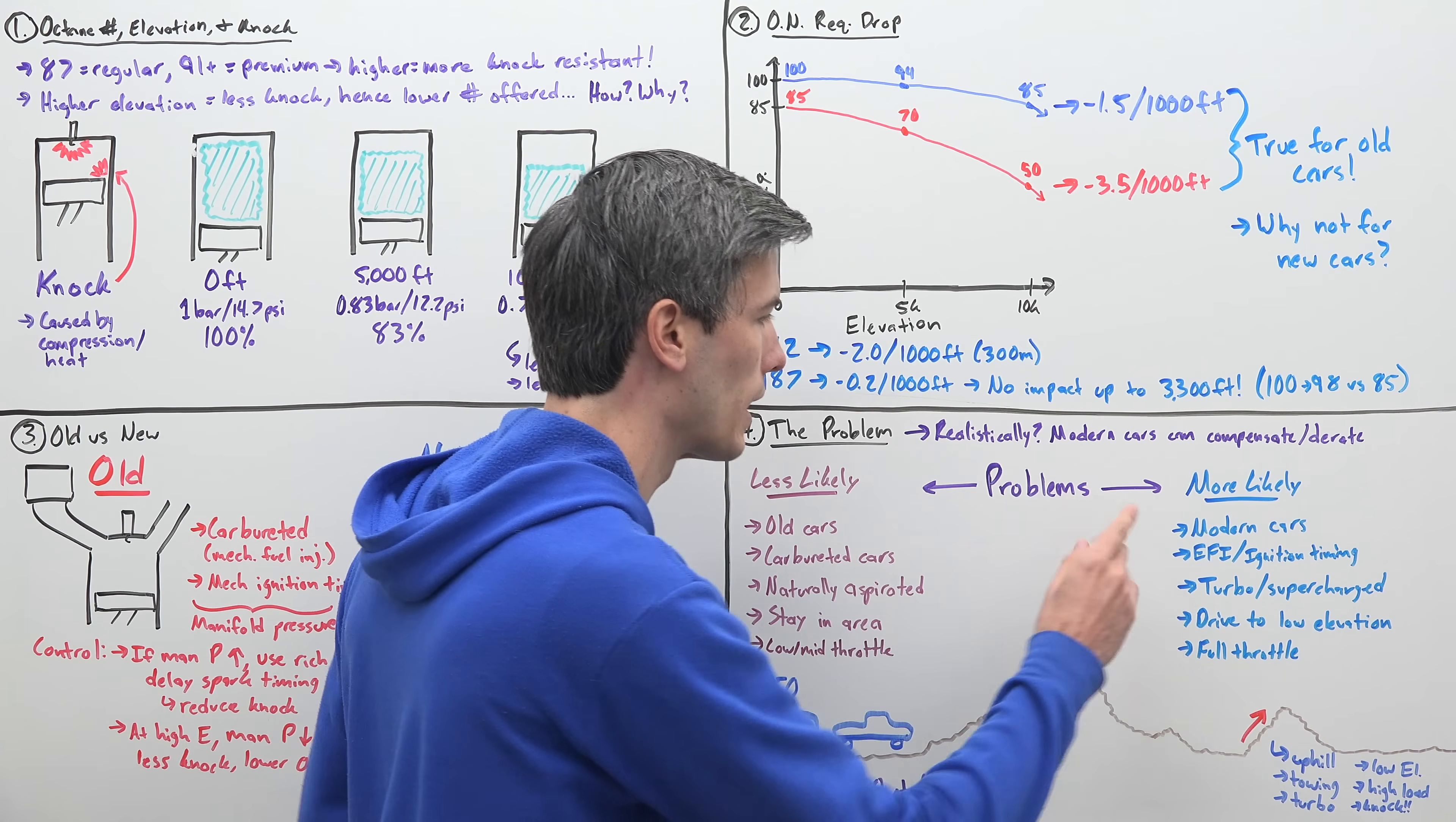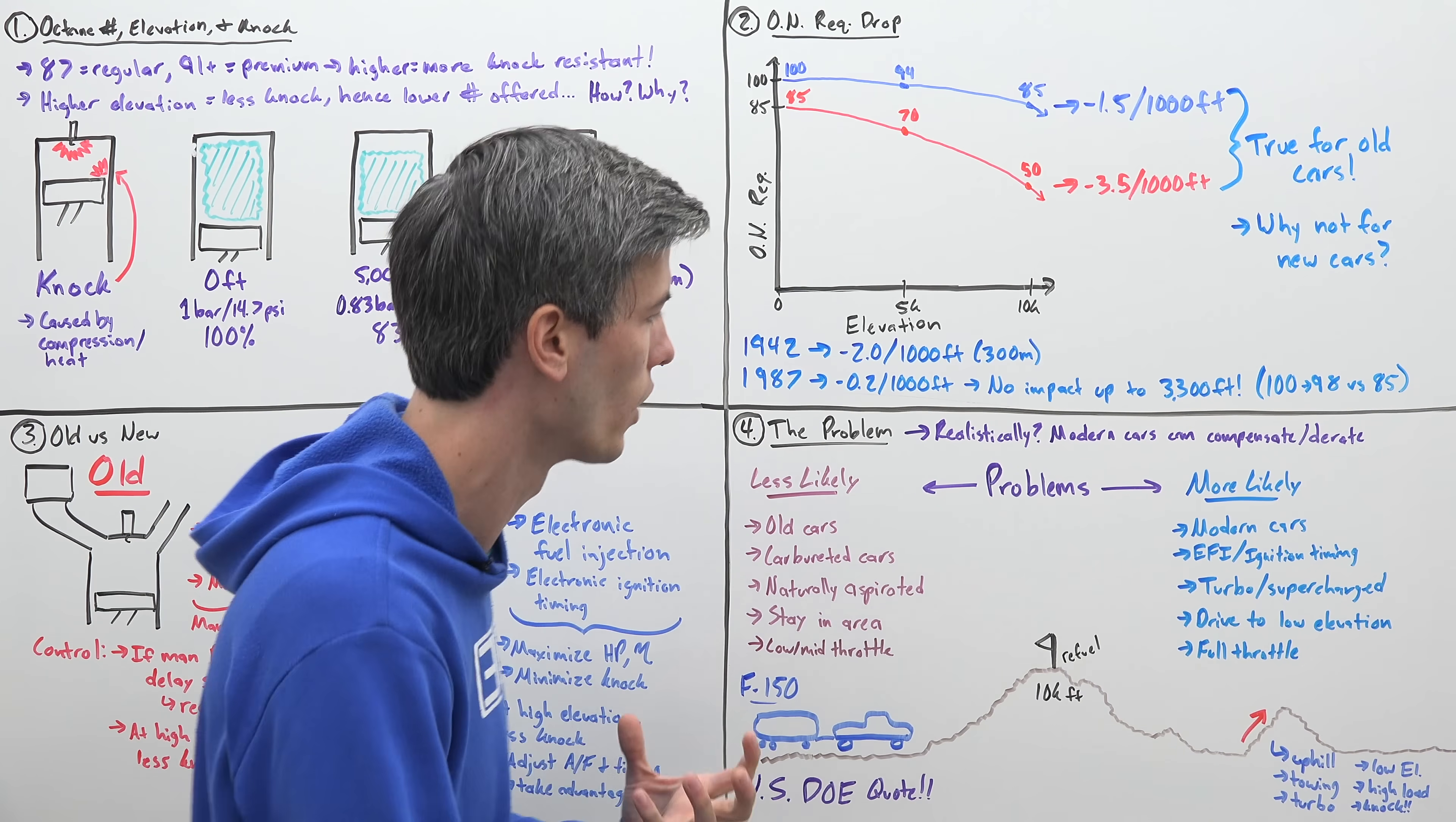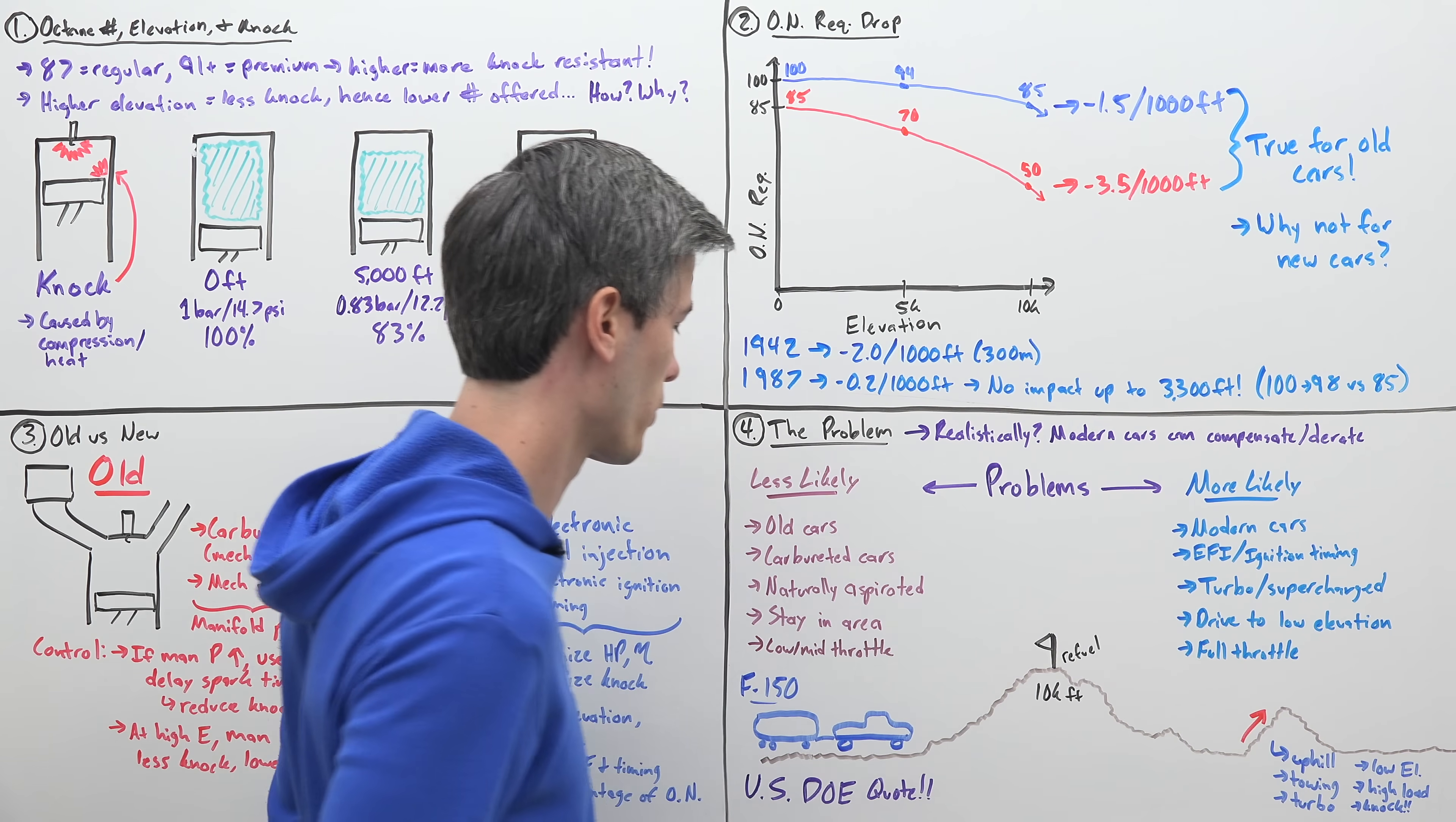What causes it to be more likely? If you have a modern car, if you have electronic fuel injection and electronic ignition timing, if you have turbocharged or supercharged cars - these are cars that are adding in more pressure on top of atmospheric, so you have really high cylinder pressures, which means you're more likely to run into knock issues. If you drive down to a lower elevation with that fuel from a higher elevation, and if you drive around at full throttle a lot where you're putting high pressures in your cylinders.